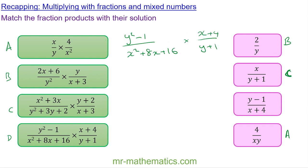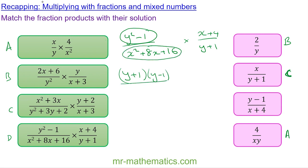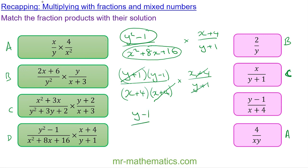So product c matches with this one here. Finally for question d, we factorize y squared minus 1 using the difference of two squares, and we factorize x squared plus 8x plus 16 which is x plus 4 lots of x plus 4. This is multiplied by x plus 4 over y plus 1. We can cross-simplify x plus 4 and y plus 1, leaving us with y minus 1 over x plus 4, which matches here.